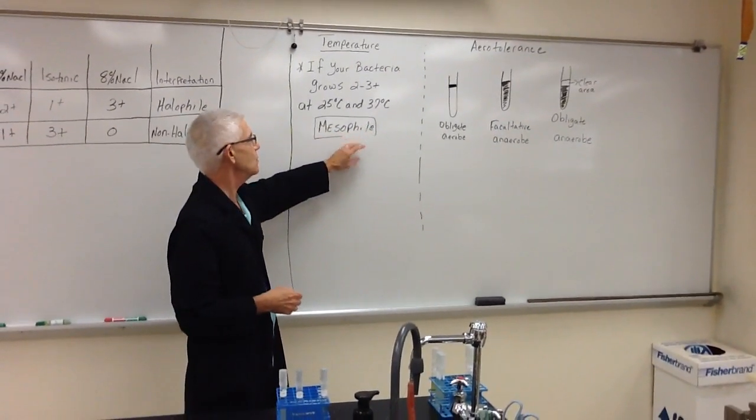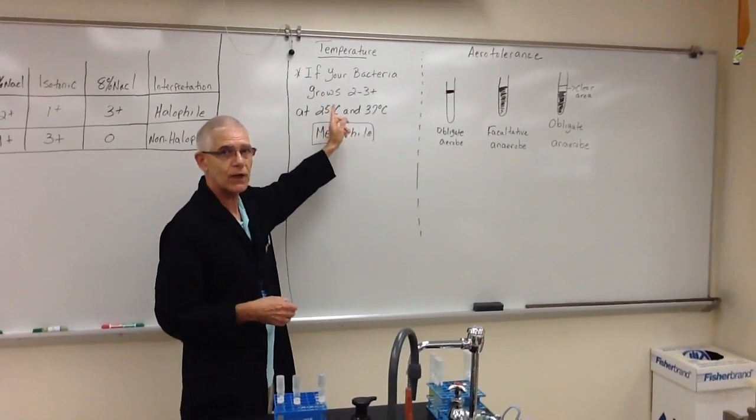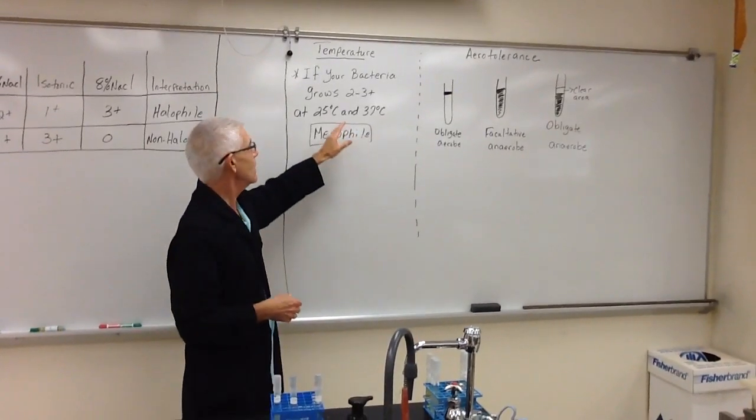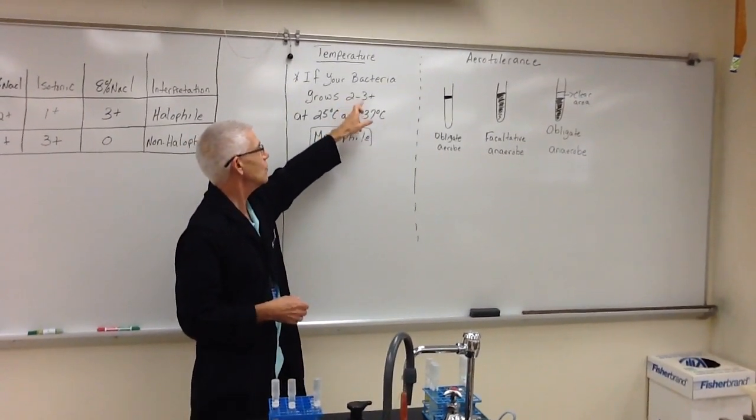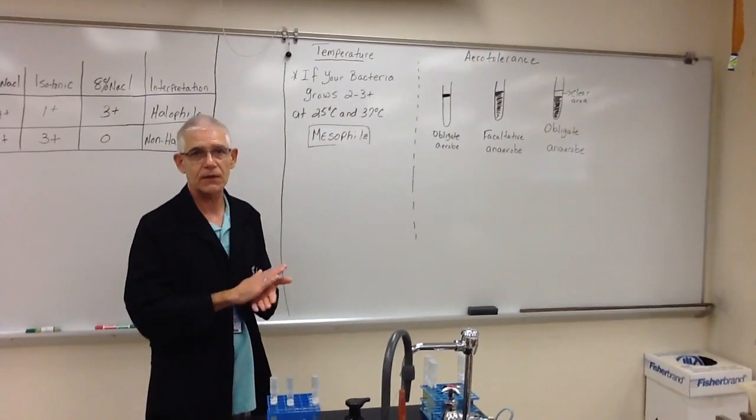So, the two tubes that you have that are going to fall into this range are going to be the 25 and 37. So, when you record your results, you want to make sure if yours grow 2 to 3 plus at 25 and 37, then you're going to write down that you have a mesophile.